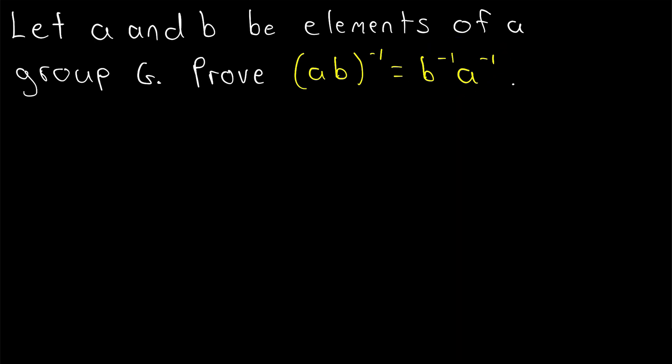Proving something is an inverse element is pretty straightforward. All we need to do is show that if we combine AB with B inverse A inverse, then we get the identity. If we can show that combining AB with B inverse A inverse in any order produces the identity element, which we're going to call E, then that proves that the inverse of A times B is B inverse times A inverse. So that's what we're going to prove in today's Wrath of Math lesson.